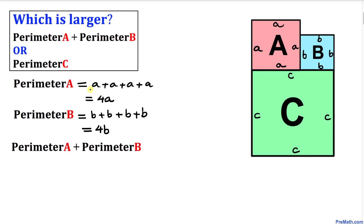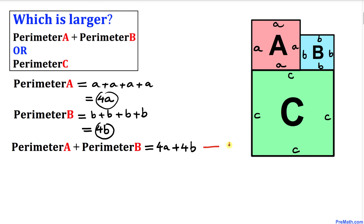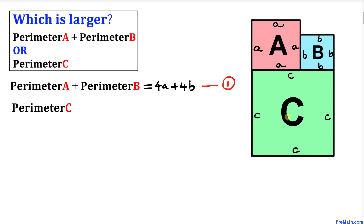Now let's add perimeter A plus perimeter B. That gives us 4a plus 4b. Let me go ahead and call this Equation 1.